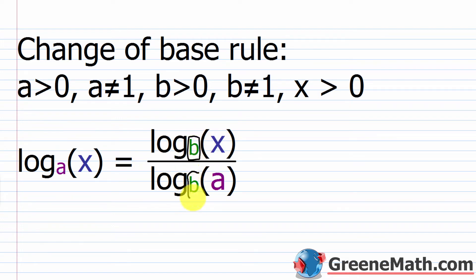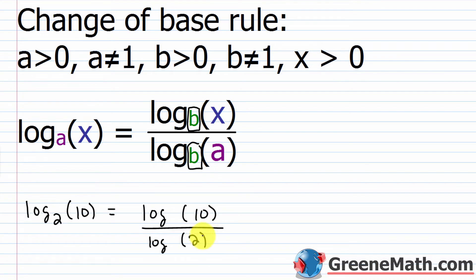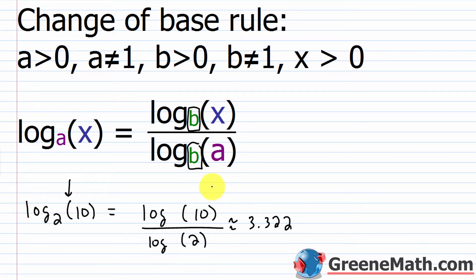Notice that the new base b is the same in both the numerator and denominator. In most cases we just use the common logarithm. So if I had log base 2 of 10 and I wanted to change this to a base 10 logarithm, I could say this is log of 10 over log of 2. You could punch this into your calculator and get an approximate value — to three decimal places, this is approximately 3.322.